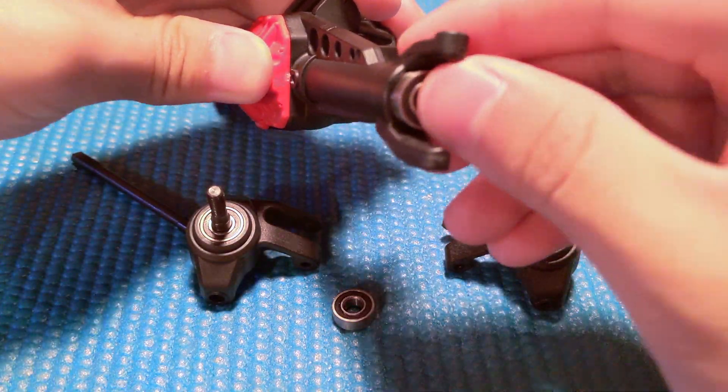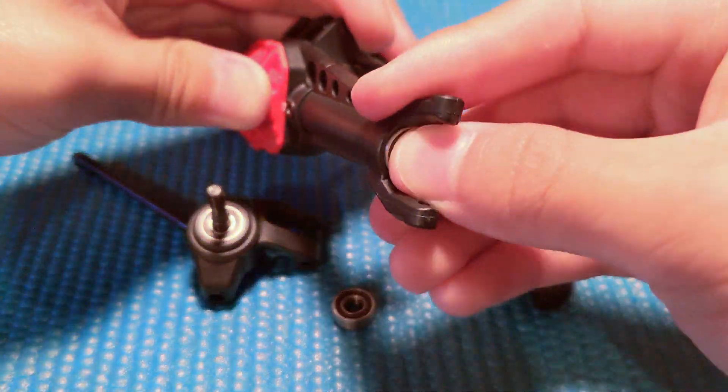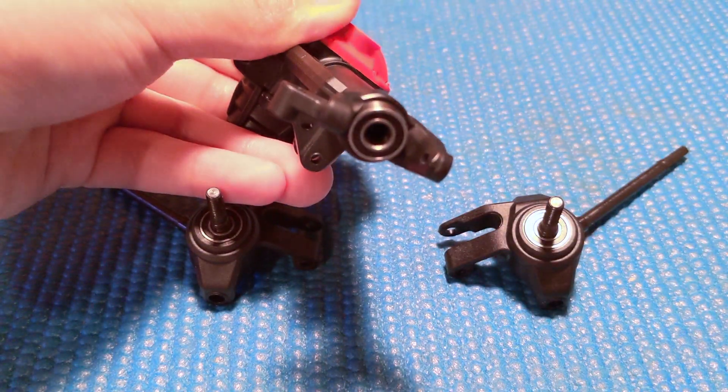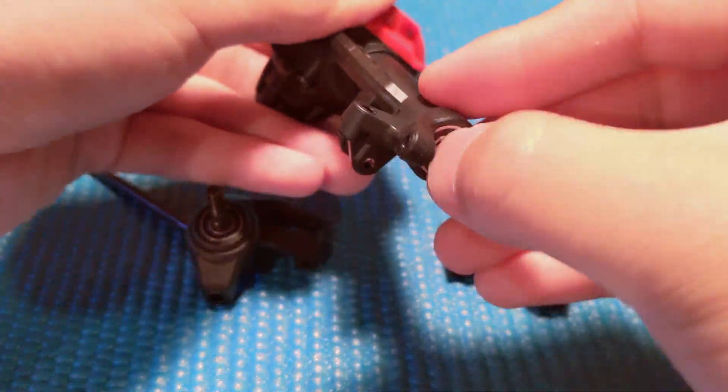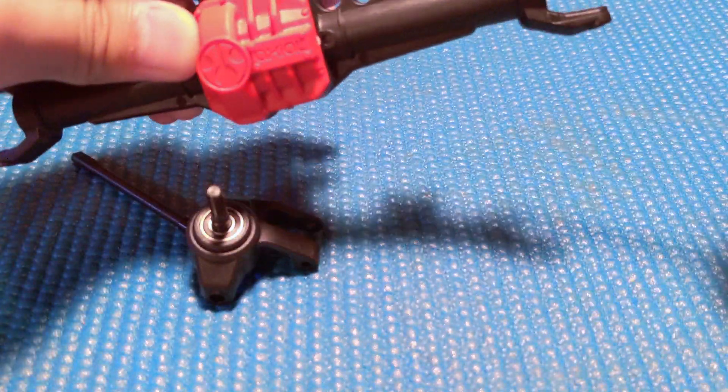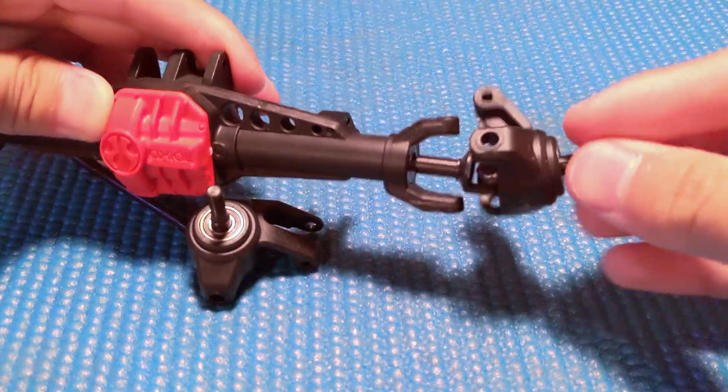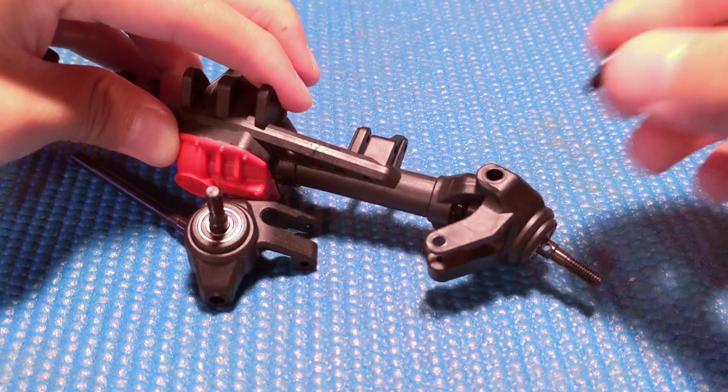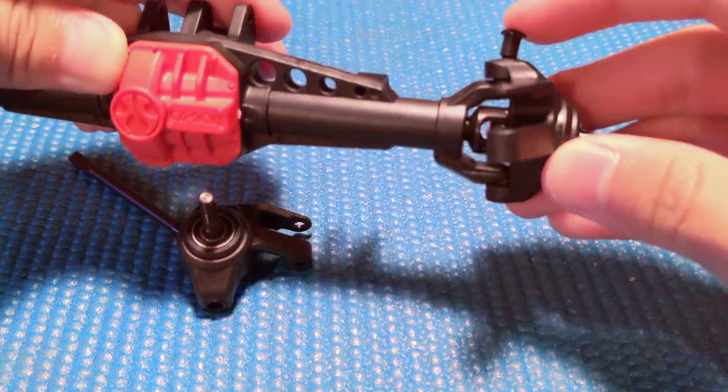Step 4: assembling the front axle. First, install a bearing on both ends of the axle housing. After that, you can slide the steering knuckles in and secure them with two screws on each side. Be sure not to get the left and right steering knuckles backwards.